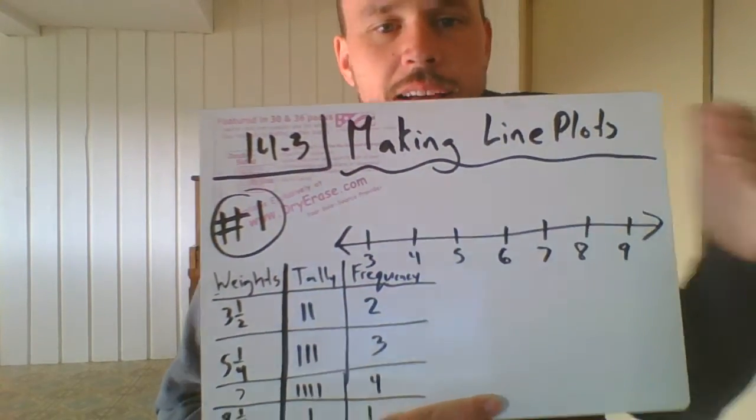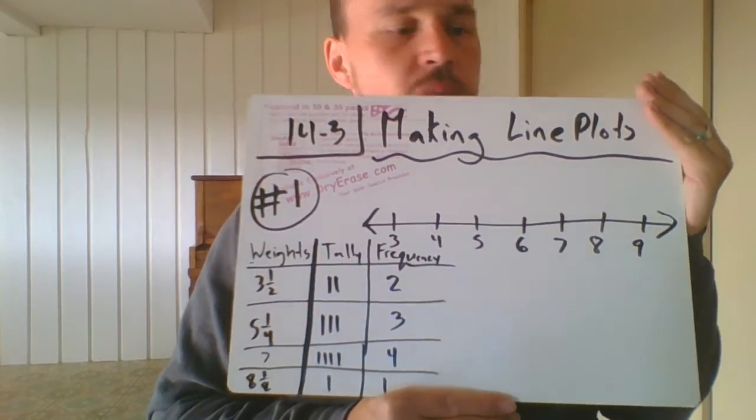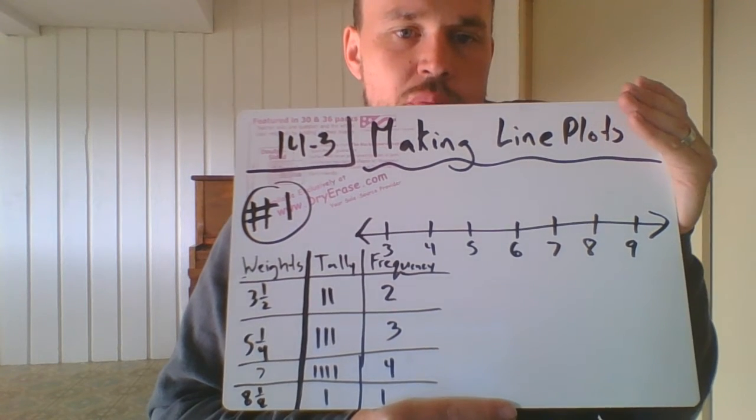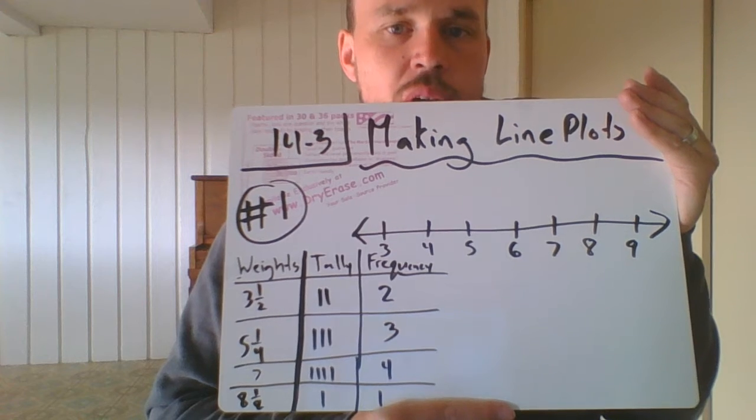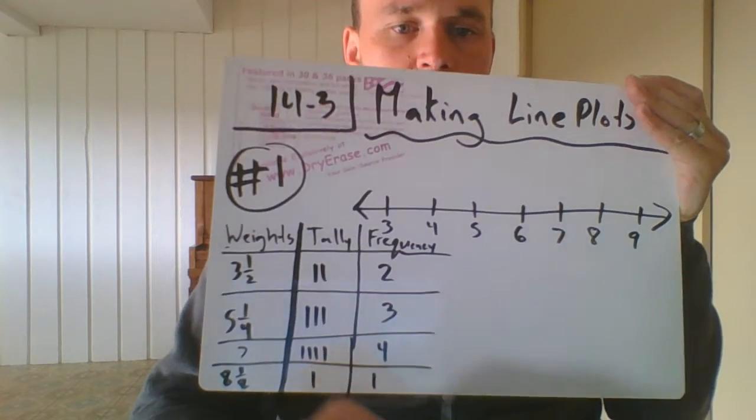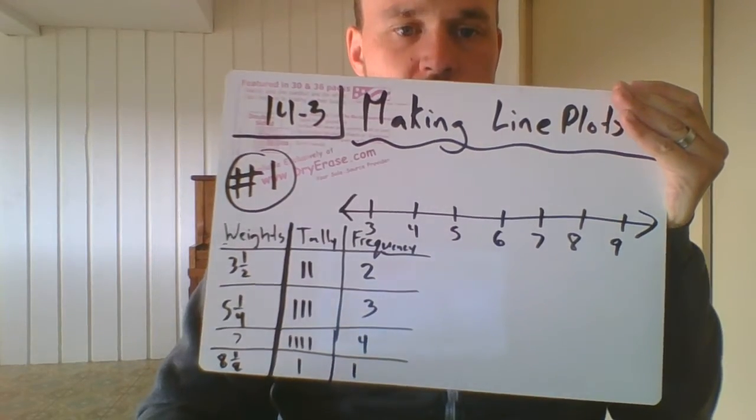So for number one, which is located on page 332, I wrote down the tally chart and a number line. So you're going to be marking these numbers on a line plot. So I'm going to pause here for a minute and go through some steps.